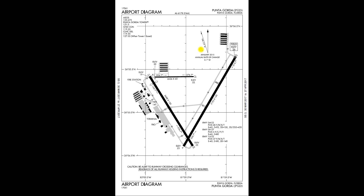We also have on here magnetic variation at the airport: 5.5 degrees west, and the annual rate of change. As of January 2015, it was 0.1 degrees west pretty much every year. We have field elevation — 26 feet — and the elevation of our touchdown zones: 23 feet for Runway 4, 23 feet for Runway 33, 19 feet for Runway 15, so there's a slight slope on that runway. The actual heading of Runway 15 is 154.7 degrees, which they round to Runway 15. This magnetic heading number changes annually because the magnetic poles move on Earth.